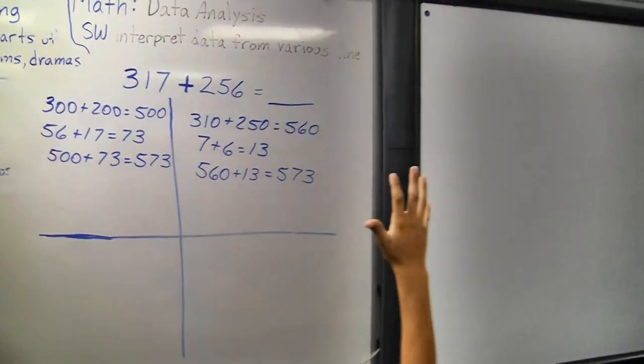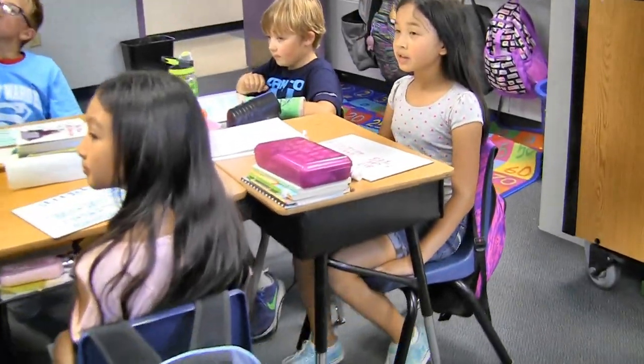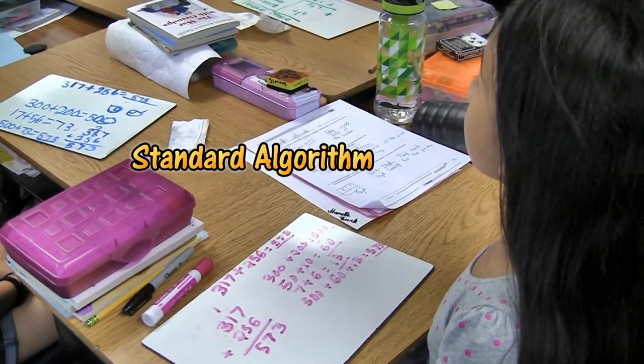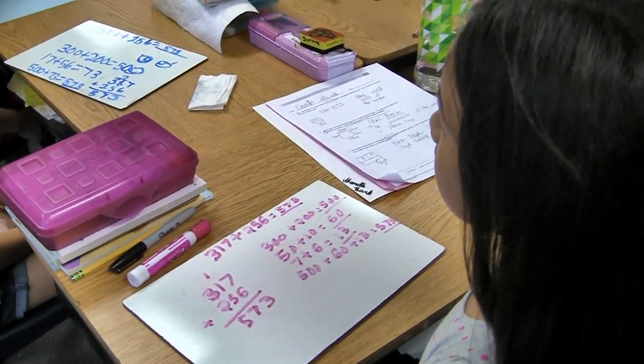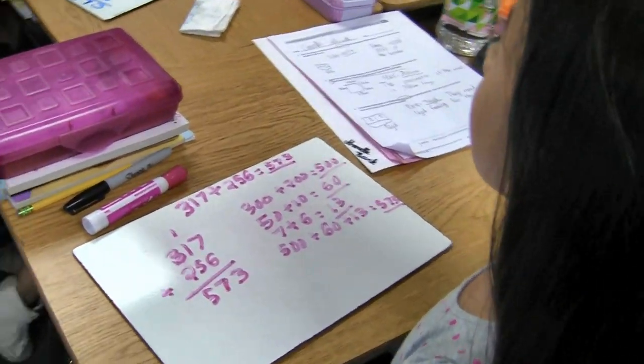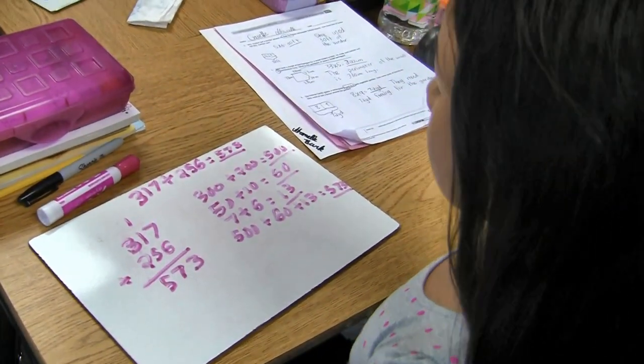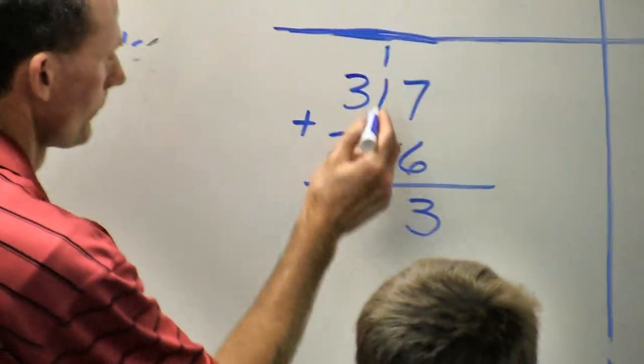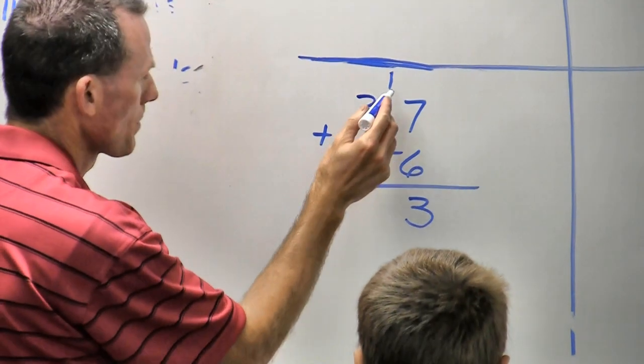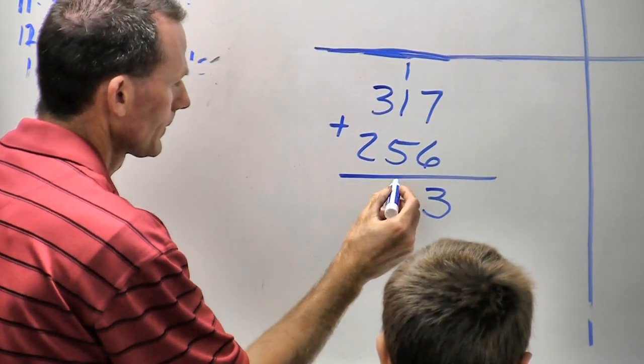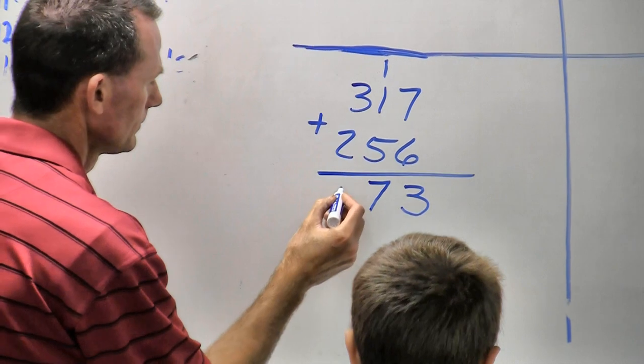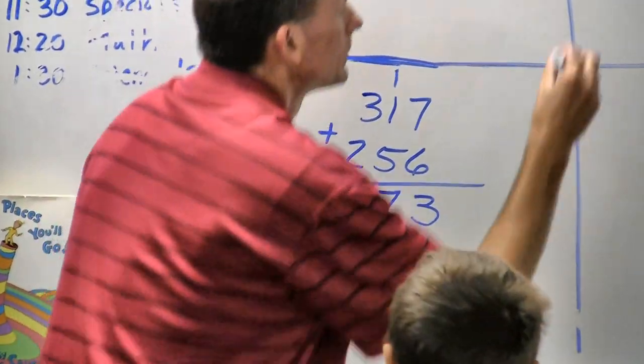Another strategy. Different strategy. So I did the standard algorithm and I did 217 plus 256 vertically. And you start in the ones place with 7 plus 6 equals 13. So you put the 10 above the other 10 in the tens place. And you put the 3 in the ones place below the 6. And then I went to the tens place, 10 plus 10 plus 50, which equals 70. And then 300 plus 200 equals 500. And my answer is 573. Nice job.